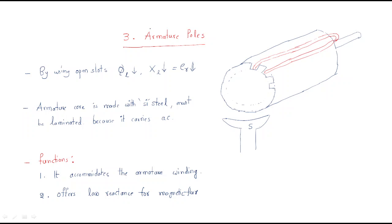We will discuss the next part of the DC machine series: armature poles. The armature is generally a rotor; the stator has field poles and the armature, which is the rotor, is shown here. The armature in a DC machine looks like this, and it has slots.